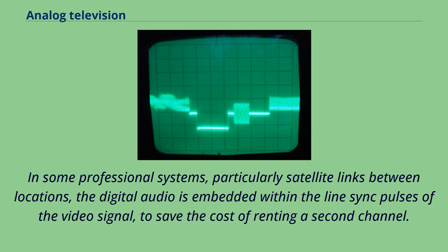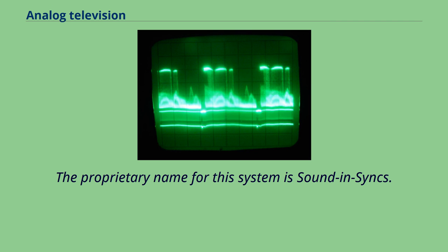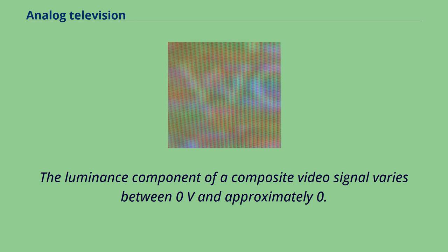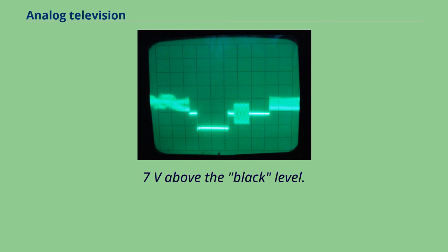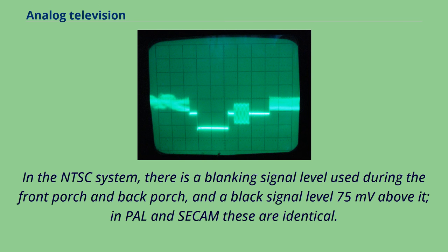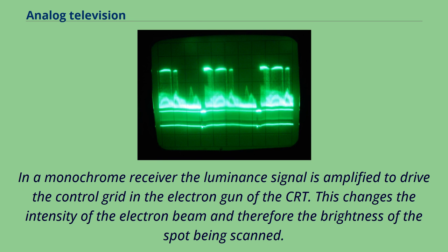The luminance component of a composite video signal varies between 0V and approximately 0.7V above the black level. In the NTSC system, there is a blanking signal level used during the front porch and back porch, and a black signal level 75 millivolts above it. In PAL and SECAM these are identical. In a monochrome receiver, the luminance signal is amplified to drive the control grid in the electron gun of the CRT. Brightness and contrast controls determine the DC shift and amplification, respectively.